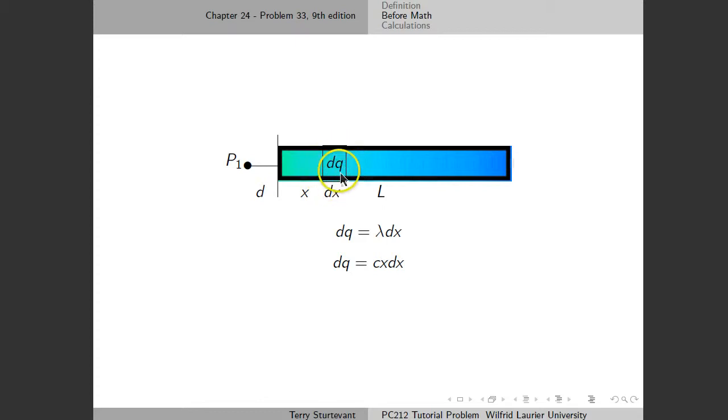So in this case, we look at a little tiny infinitesimal element of charge, dq. The amount of charge, since the total charge is lambda times the total length, then the charge in this little element is lambda times dx.